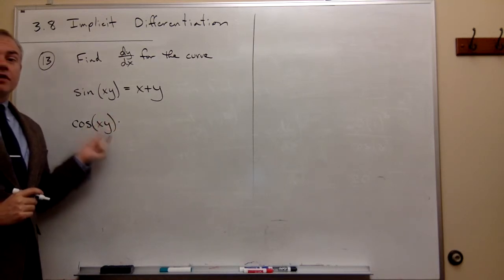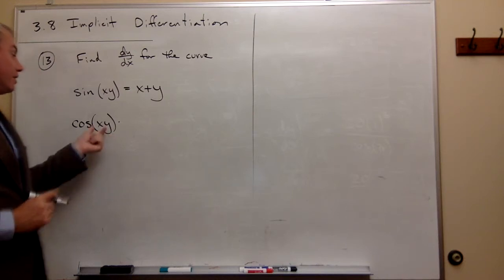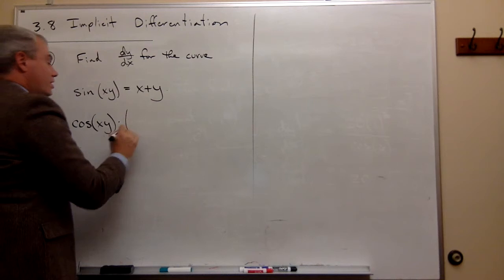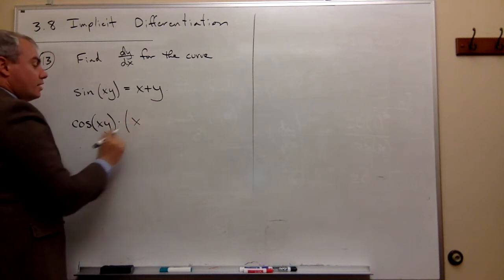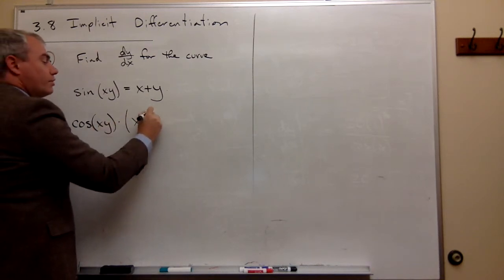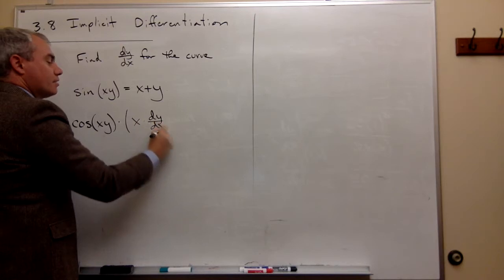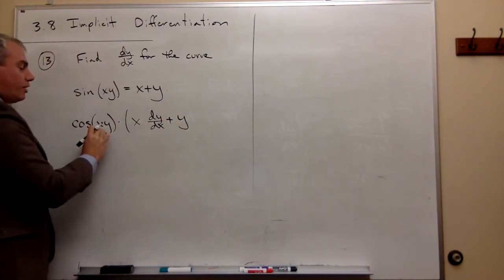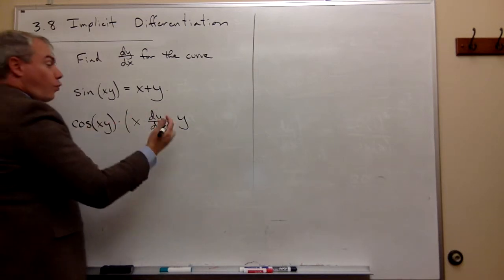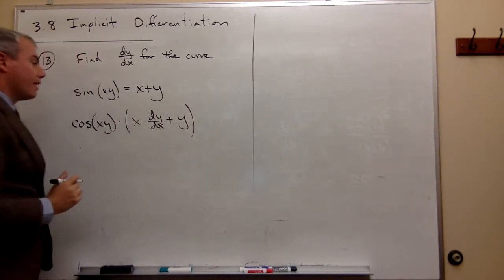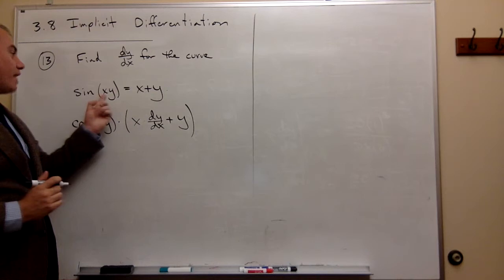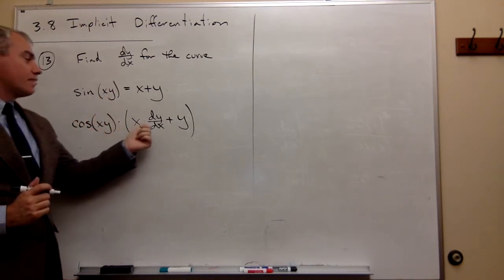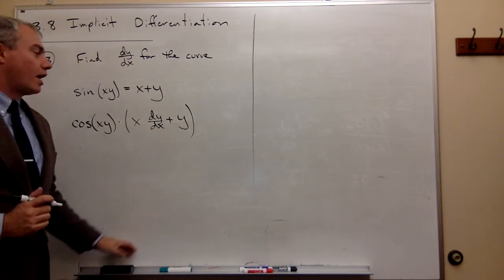But the derivative of xy is a product, so we need to use the product rule. So it's the first, x, times the derivative of y, which we call dy/dx, plus the second, y, times the derivative of x, which is just 1. So the derivative of sin(xy) is cos(xy) times x dy/dx plus y.